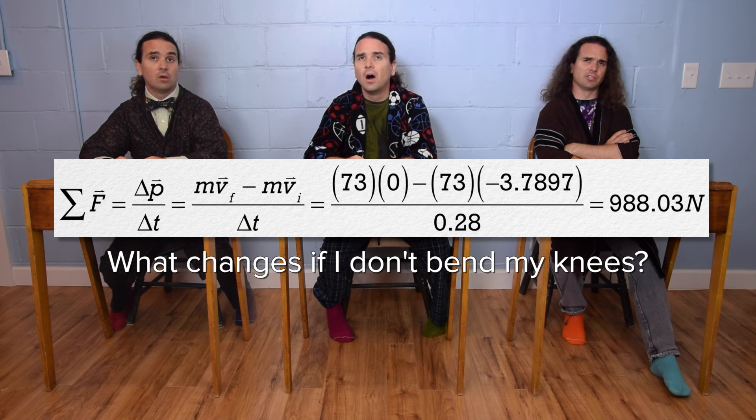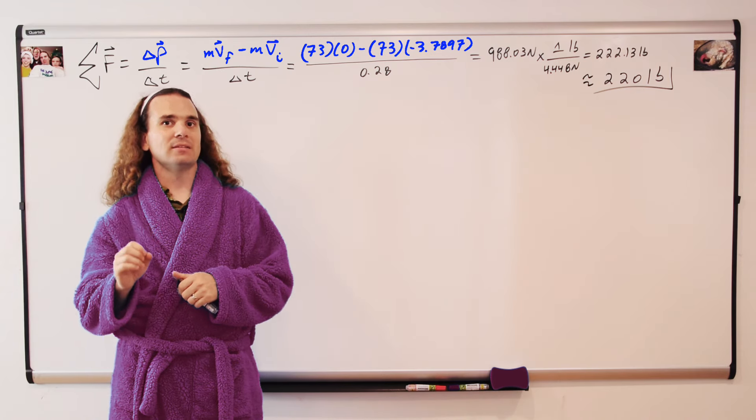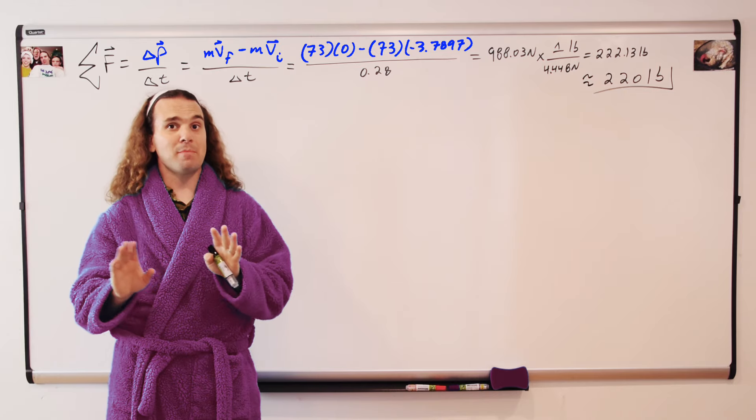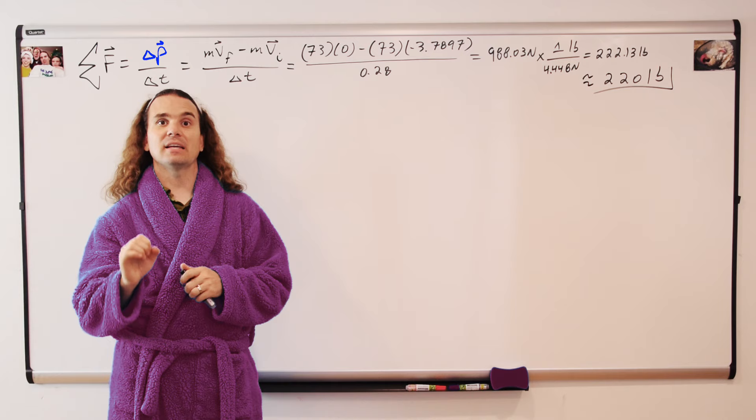So, the only variable which is different if you don't bend your knees is the change in time. Correct. Everything in the numerator remains the same regardless of whether I bend my knees or not. The change in momentum stays the same.